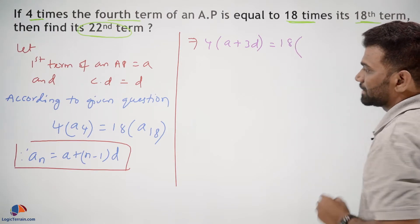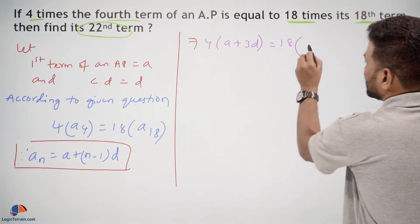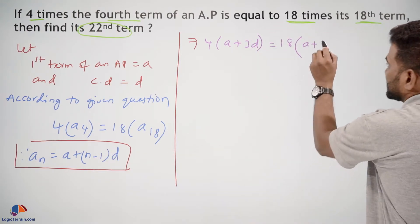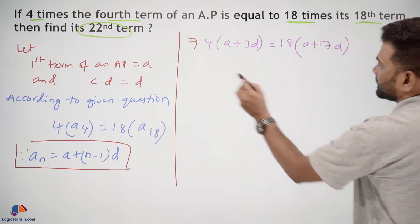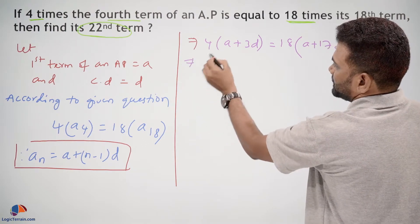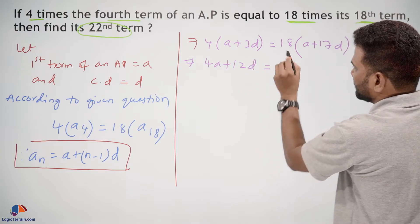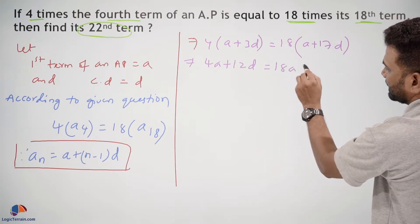18 times the 18th term, that is A plus (18 minus 1) which is 17D. That implies 4 into A is 4A plus (3 times 4 is 12) 12D equals 18 into A, which is 18A plus (18 times 17 is 306) 306D.